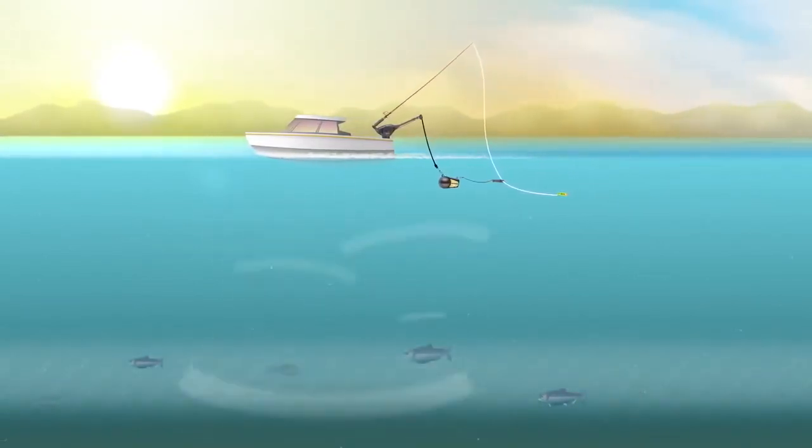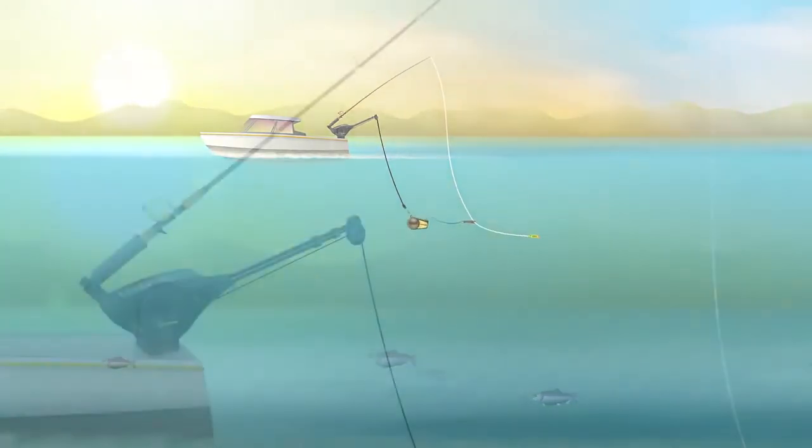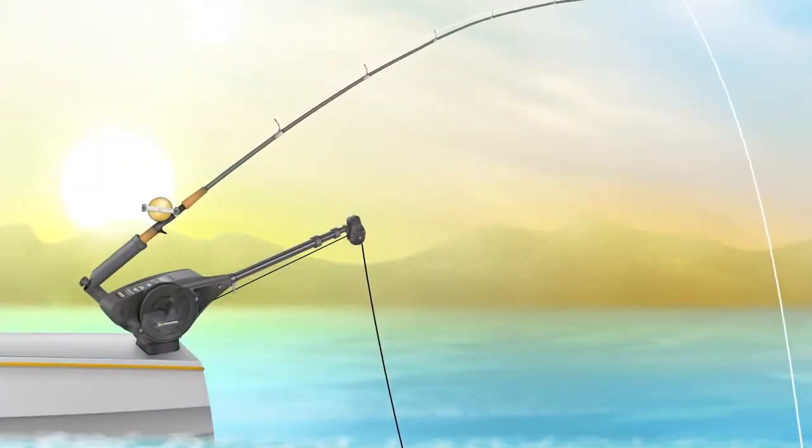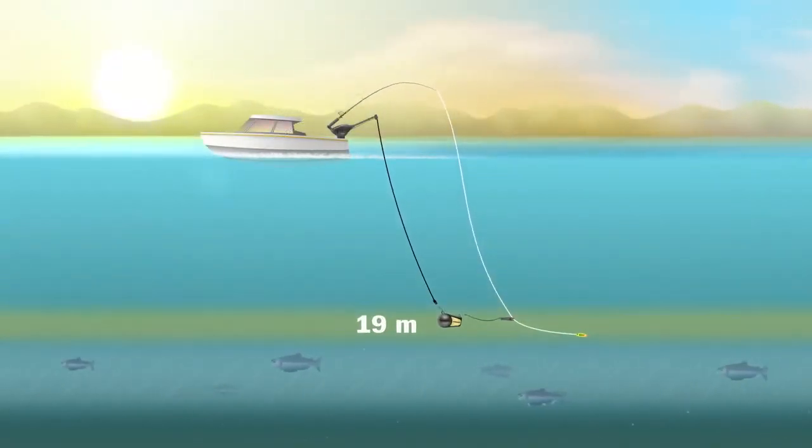As the weight lowers, your fishing rod will bend. A line counter on the downrigger will tell you exactly how far down you are, so you can hit the perfect spot.